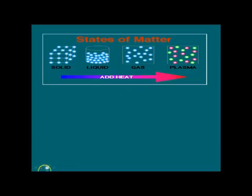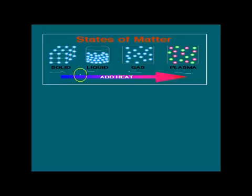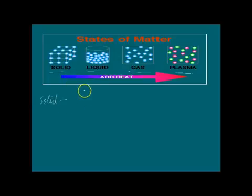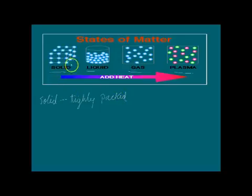As you can see in this figure, the first one is solid and the second is liquid, gas and plasma. By seeing this figure, you can identify some of the important properties of solid, liquid, and gas. In solid, as you can see in this figure, the atoms or molecules are tightly packed.